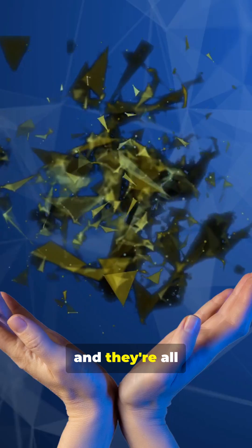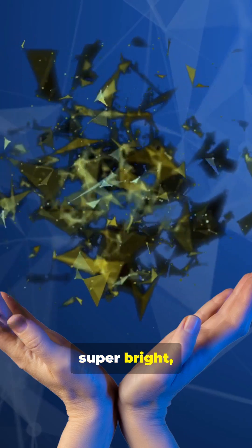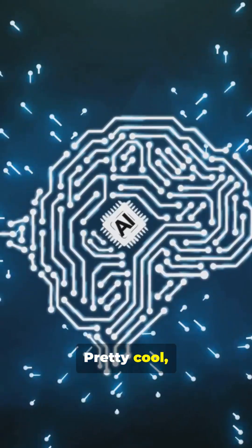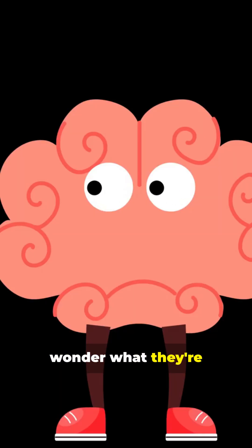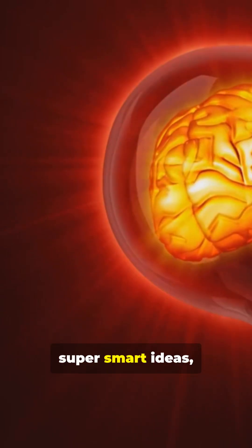Alright, so you're looking at this picture, right? It's got these animated characters and they're all reaching for this super bright glowing brain in the middle. Pretty cool, huh? It kinda makes you wonder what they're all trying to get from it. Maybe it's like super smart ideas or some kind of special power, what do you think?